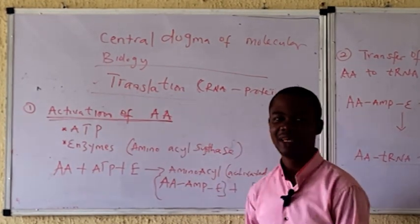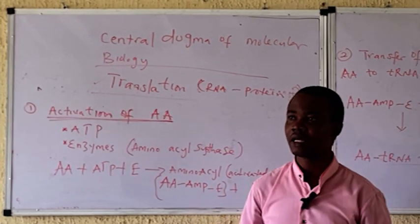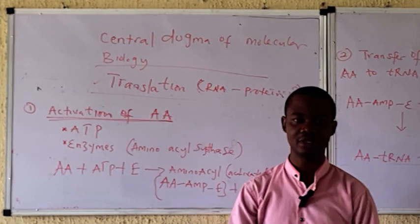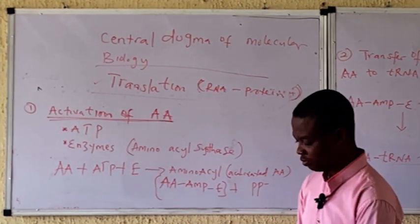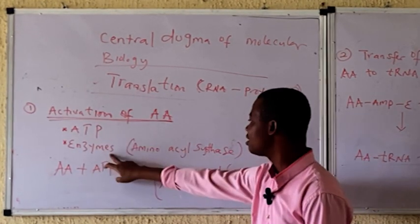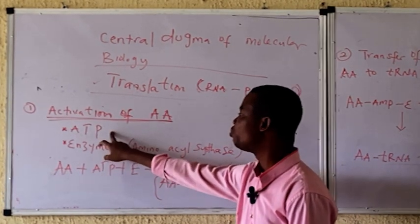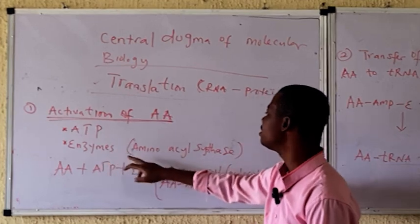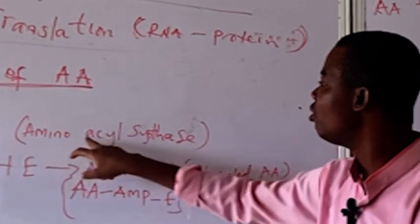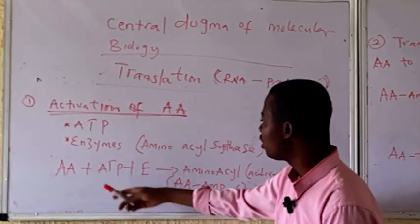In the cytoplasm we have several amino acids. However, these amino acids need to be activated. For the activation of amino acid, it requires ATP and an enzyme. The name of this enzyme is aminoacyl synthetase.